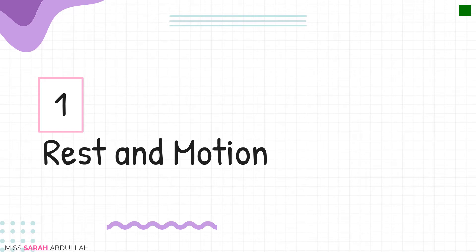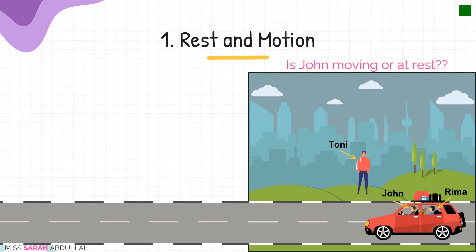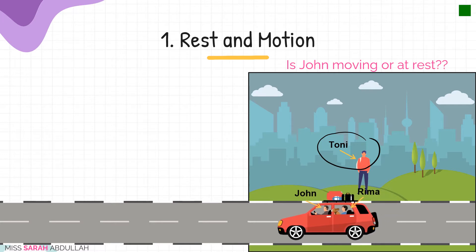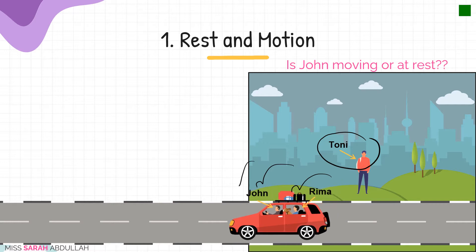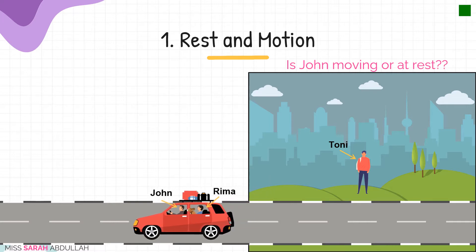Starting with the first paragraph called rest and motion. Now let's take a look at this picture. You can see in a car I have John in the driving seat and Rima in the back seat, while Tony is simply standing on the sidewalk. The big question is: is John moving or at rest? Well, according to Tony, it seems that John is actually in motion — John is changing his position at different times. But according to Rima, John is at rest; he's not moving at all.